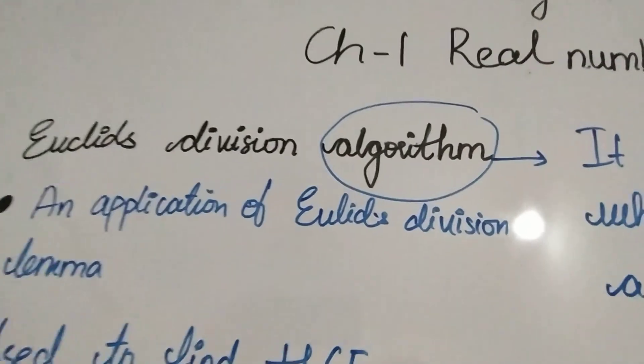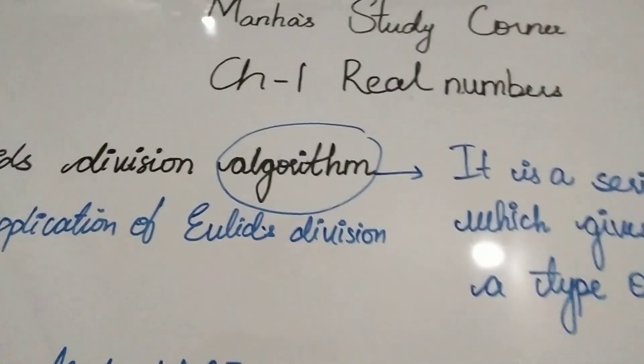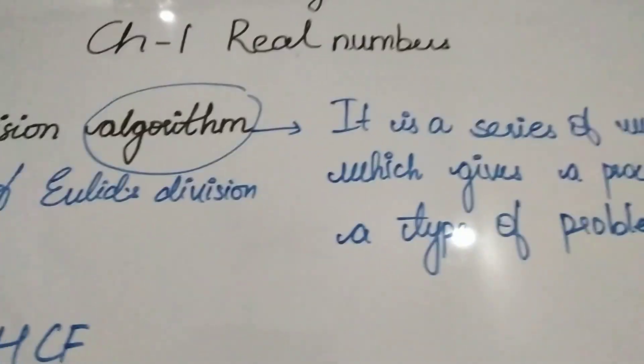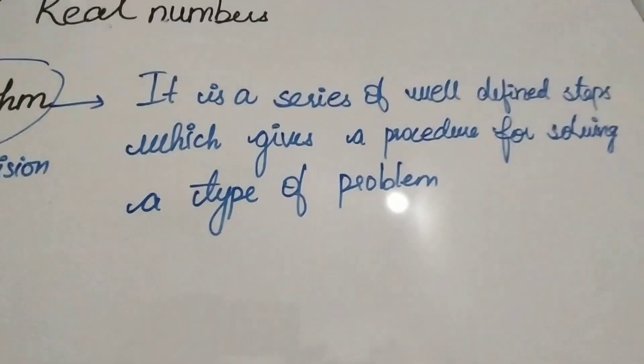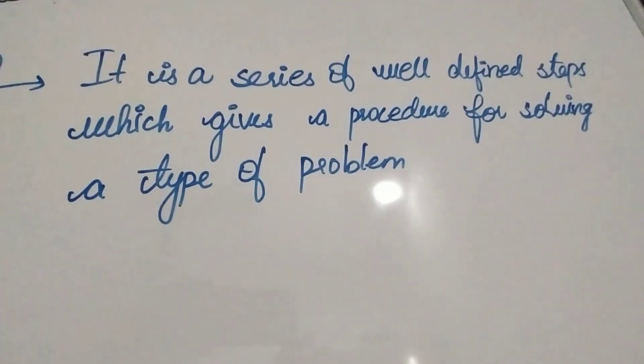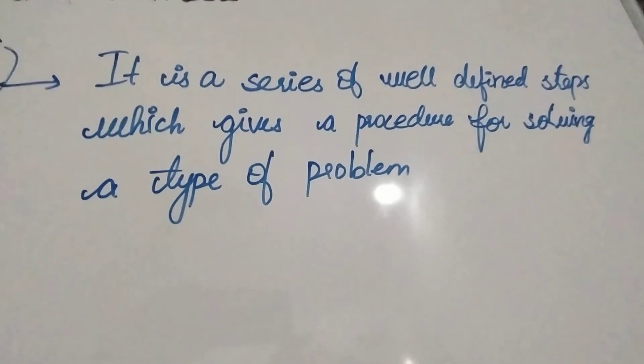Next is Euclid's division algorithm. What does algorithm mean? It is a series of well-defined steps which gives a procedure for solving a type of problem.